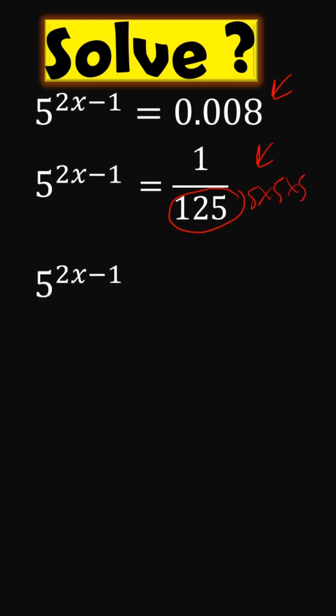replace, you're going to get 1 over 5 cubed. Now this 1 over 5 cubed can be rewritten as 5 to the power of minus 3. So now notice here, when you've got the same basis, the rules of exponents says